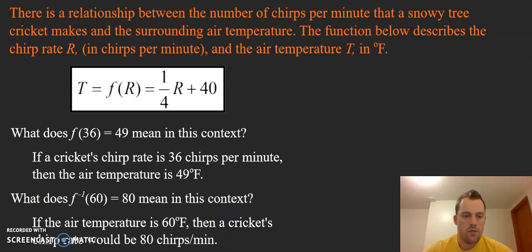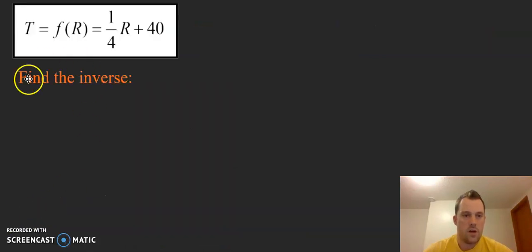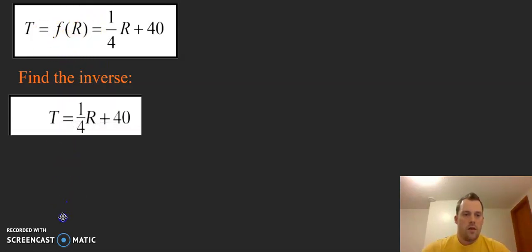Now let's actually find what the inverse of this function is. Recall there's four steps. We first have to rewrite the function f(R) as T, and again we think about it as X and Y.